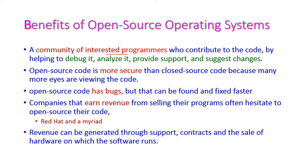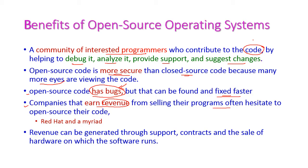The benefits of open source operating systems: there is a community of interested programmers working towards this open source software system, helping with debugging, analyzing, providing support, and suggesting changes. These operating systems are more secure compared to closed operating systems because many people are involved. Bugs in the code can be easily identified and fixed. Some companies also earn revenue from open source by selling special programs — for example, Red Hat — and revenue can be generated through support contracts and the sales of hardware on which the software runs.